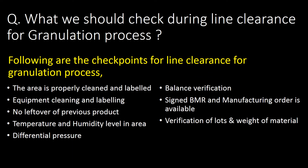What should we check during line clearance for the granulation process? The checkpoints for line clearance are: first, the area is properly cleaned and labeled; second, equipment cleaning and labeling; third, no leftover of previous product; fourth, temperature and humidity level of the area; fifth, differential pressure; sixth, balance verification; seventh, signed BMR and manufacturing order is available; and eighth, verification of lots and weight of materials.